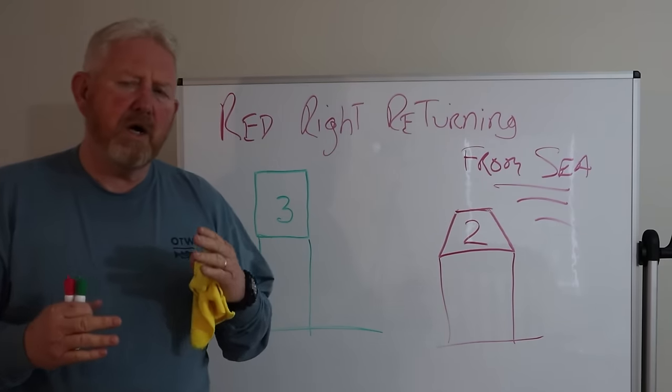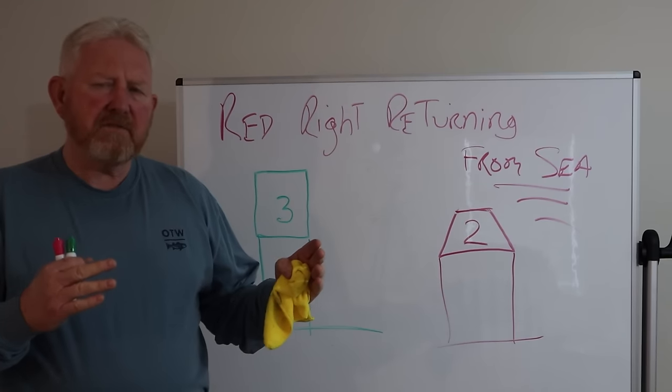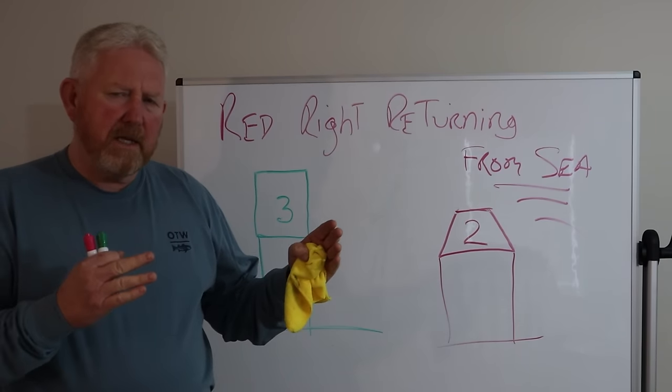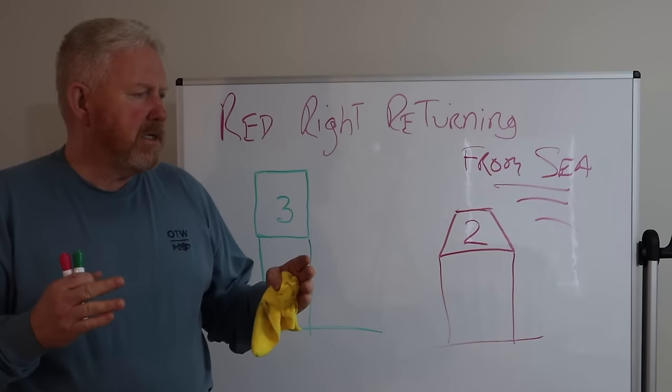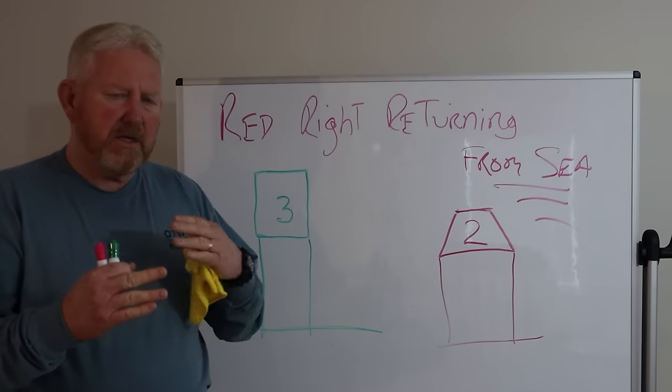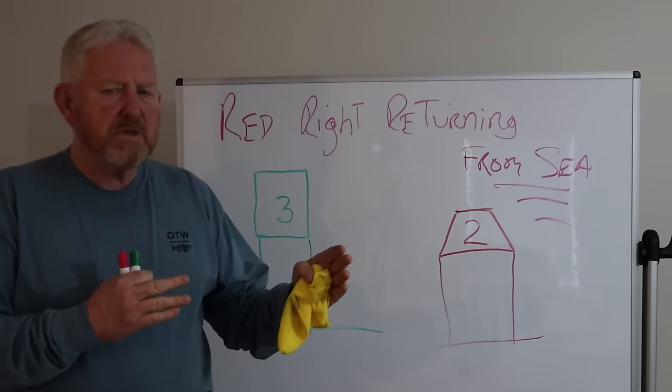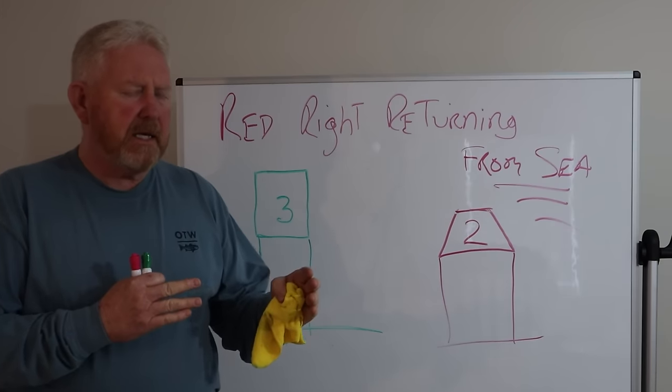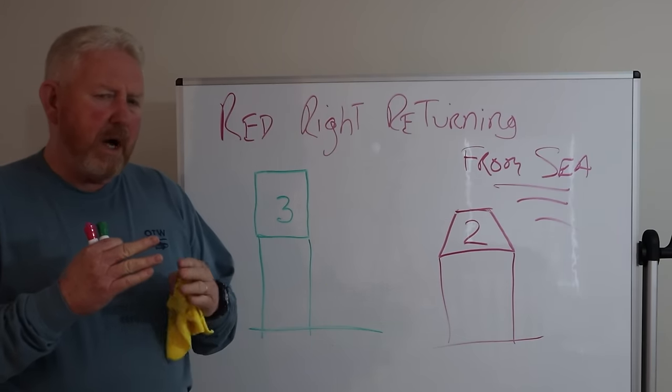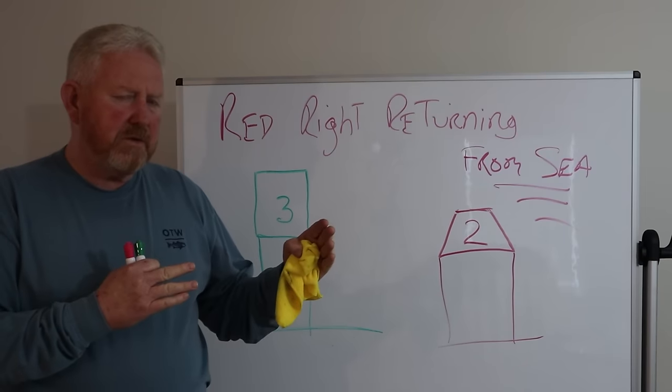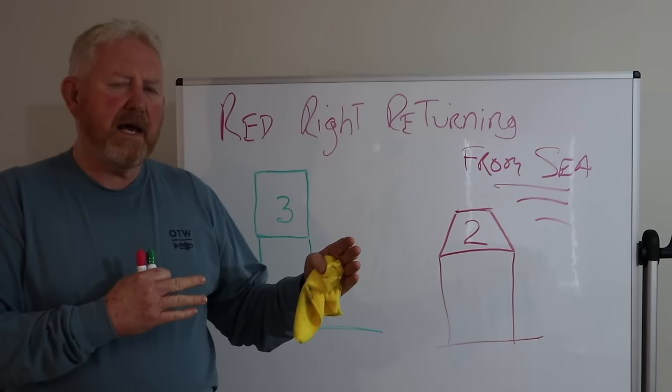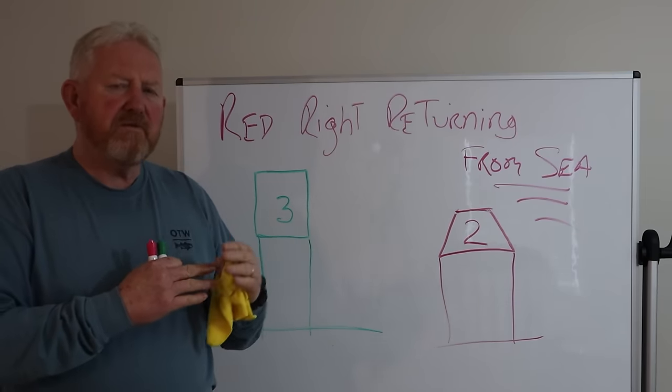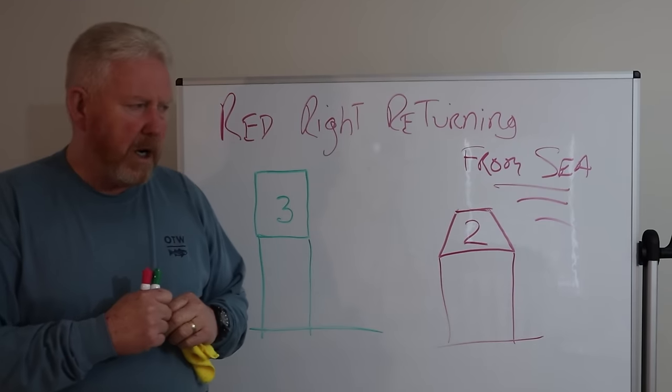So sometimes you have to look at what the person who laid out the chart is trying to get you to do. Sometimes it can be a little confusing, just like going around that island. You have to figure out what he or she intended for you to do as far as returning from sea or if you're going to sea. Where's the good water?